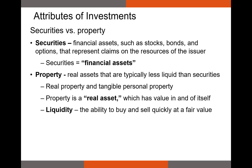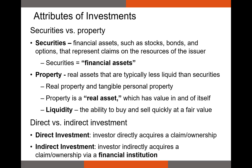Consider an example: if you need to sell a house this week and the fair value is $200,000, but few buyers can act that quickly, you might have to sell at a discount — that's an illiquid market. By contrast, if you own Apple stock worth $300 and can sell it for $299.95 in a minute, that's highly liquid. Direct investments are made by an investor themselves — buying 100 shares of Ford stock. Indirect investments occur through a vehicle like a mutual fund that holds those shares on your behalf.